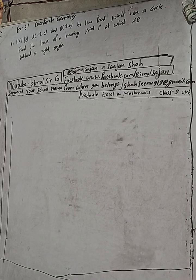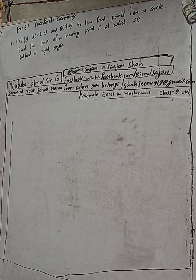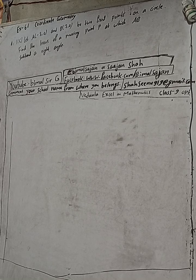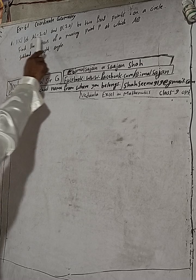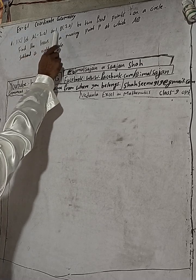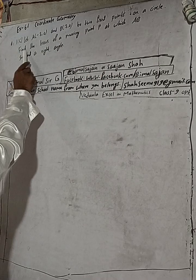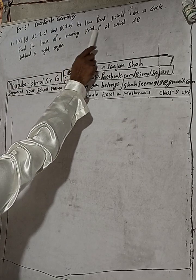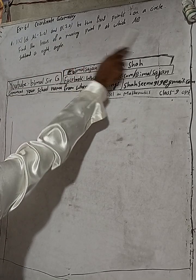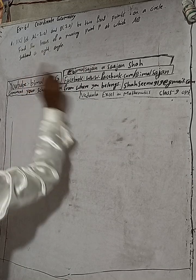Hi class 9 and 10 students, welcome back to Bimal Surjee YouTube channel. This is question number 11C, Exercise 6.1, Coordinate Geometry class 9 OPT Math. Here the question is: let A and B be two fixed points on a circle. Find the location of moving point P at which angle APB subtends a right angle.